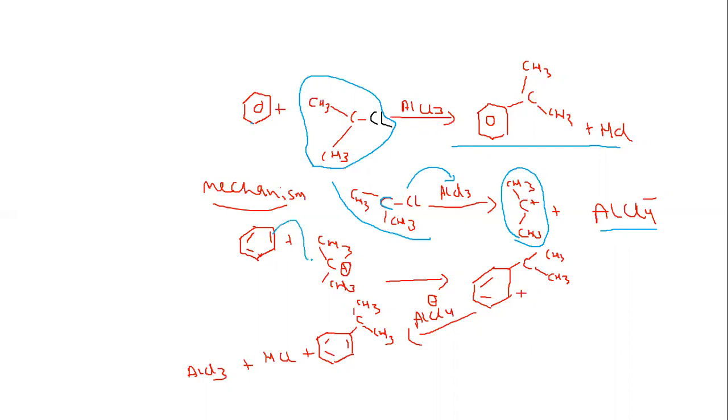Now the ring will attack. It will become CH3, CH3 positive. In this ring, the isopropyl group will be positive. The last step will involve AlCl4 negative.